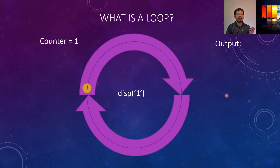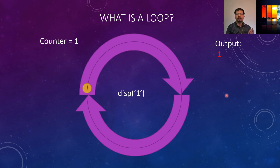Whatever we define is that the counter variable will increase after one pass of the loop, and then it will output whatever instructions we have given it inside the loop. After counting one loop it will output the variable one in the output window one time.